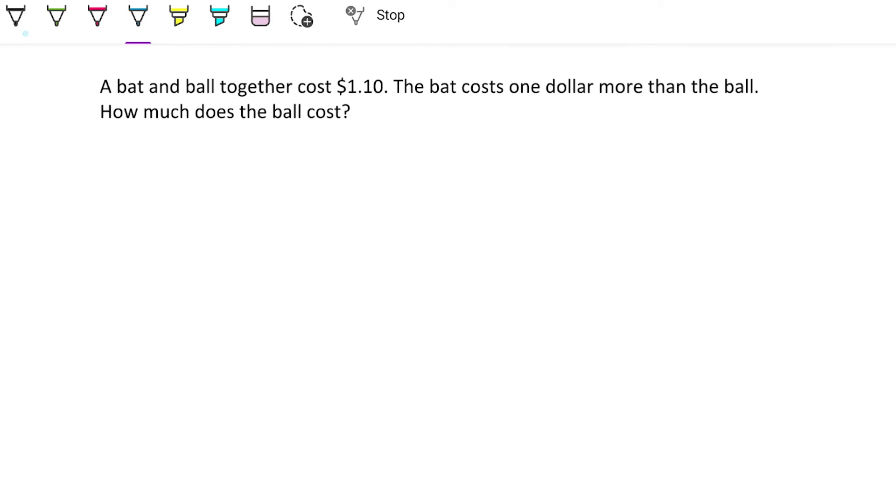Going straight to the problem, what you think is if it's $1.10 together and one is one dollar more than the other one, then it should be ten cents, right? The ball should cost ten cents. But that would be incorrect because if the ball costs ten cents and the bat costs one dollar more than the ball, then together it won't be $1.10.